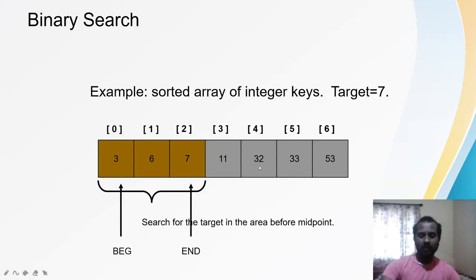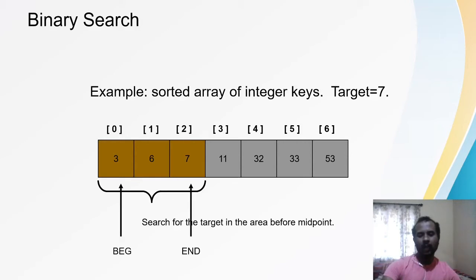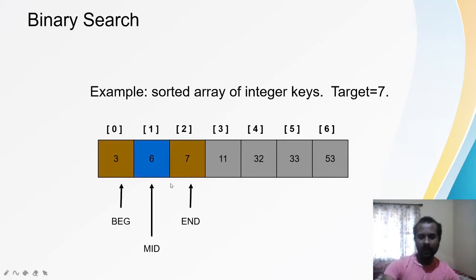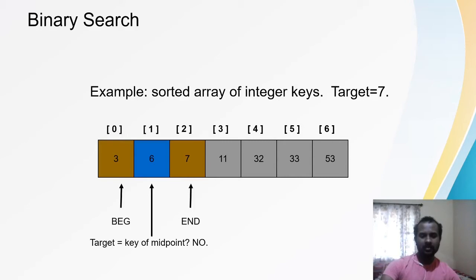Now I have to find the mid element again. Beginning plus end divided by 2: 0 plus 2 divided by 2 equals 1. So my new mid element index is 1, and data[1] is 6. I compare the middle element with the target: is 6 equal to 7? No, it is not equal. Is 7 lesser than 6? No. Is 7 greater than 6? Yes, the target is greater than the mid element.